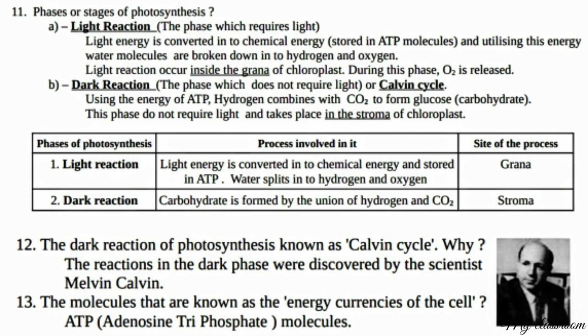The dark reaction of photosynthesis is known as the Calvin cycle. Why? Because the reactions in the dark phase were discovered by the scientist Melvin Calvin. The molecules known as the energy currencies of the cell are ATP — Adenosine Triphosphate molecules.